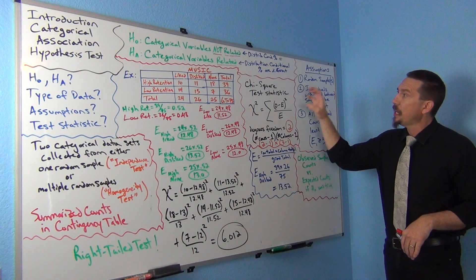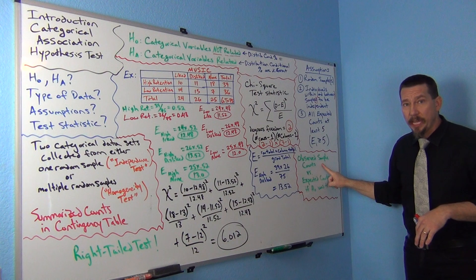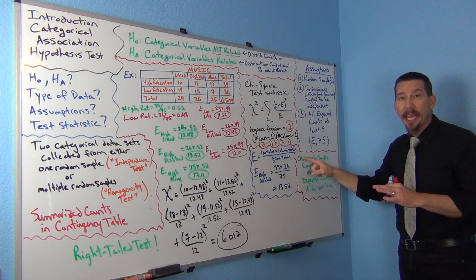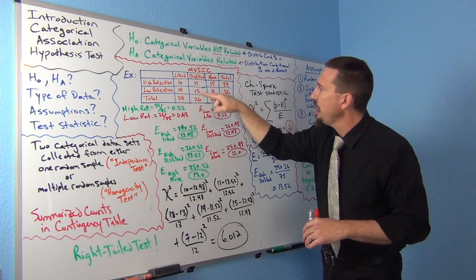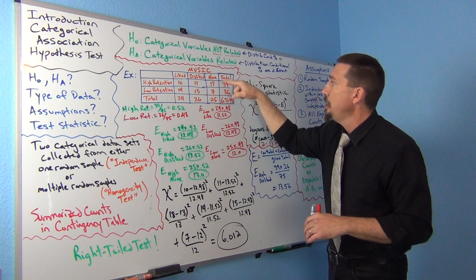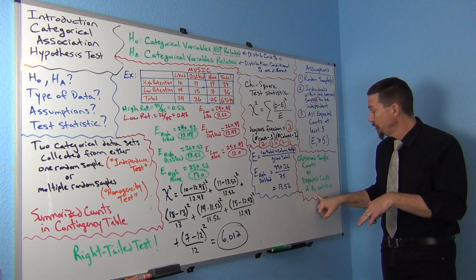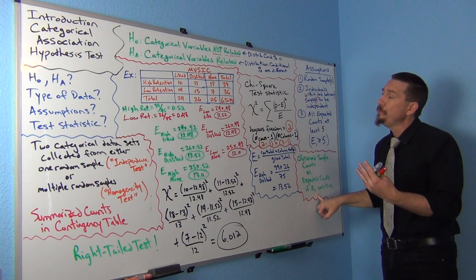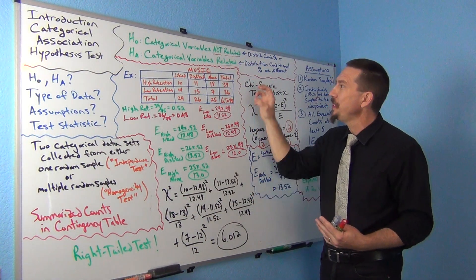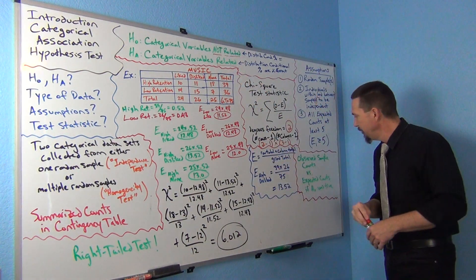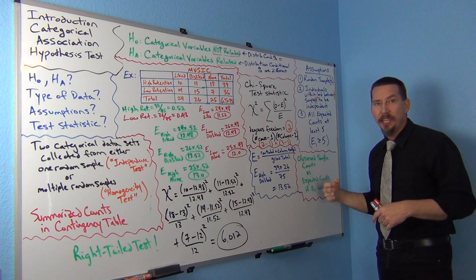The idea of the chi-square is observed versus expected. The observed counts are what actually happened in the sample data — those are the numbers in the table, not the totals. We need to compare the observed counts to what we expect to happen if the null hypothesis were true. The tricky part is figuring out what we expect if the categorical variables are not related. When you hear 'observed,' think sample data; when you hear 'expected counts,' think null hypothesis — theoretical counts based on the null hypothesis.